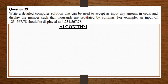Write a detailed computer solution that can be used to accept as input any amount in series and display the amount such that thousands are separated by commas. For example, an input of 1234567.78 should be displayed as 1,234,567.78.